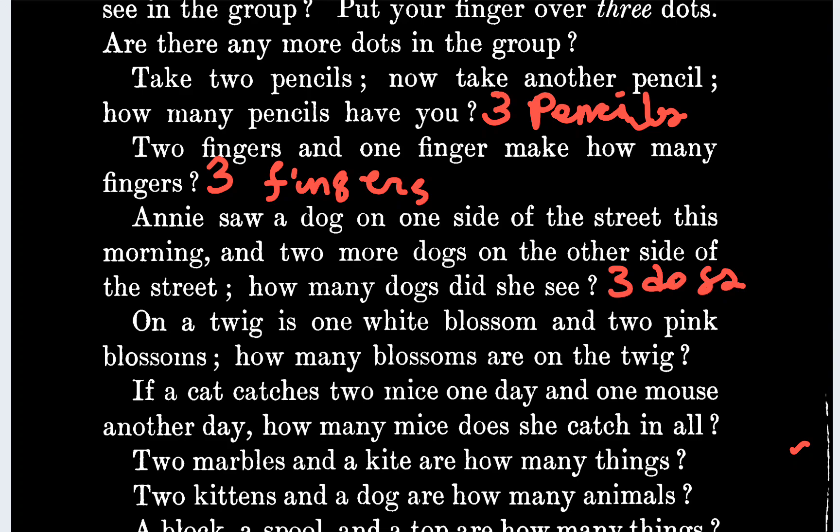On a twig is one white blossom and two pink blossoms. How many blossoms are on the twig? There are three blossoms.